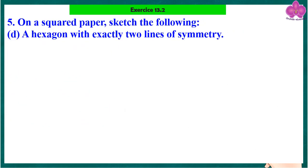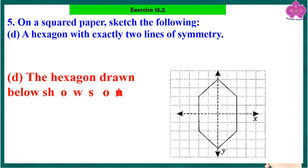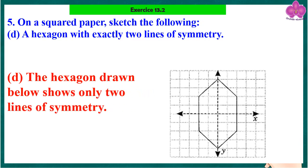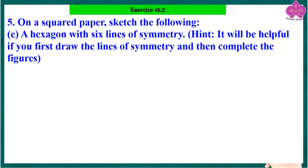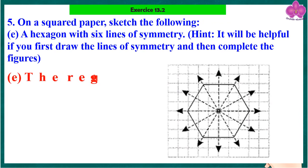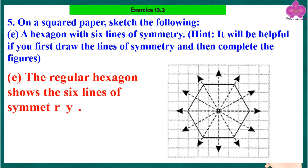A hexagon with exactly two lines of symmetry — the hexagon drawn shows only two lines of symmetry. A hexagon with six lines of symmetry — hint: it will be helpful if you first draw the lines of symmetry and then complete the figure. The regular hexagon shows six lines of symmetry.